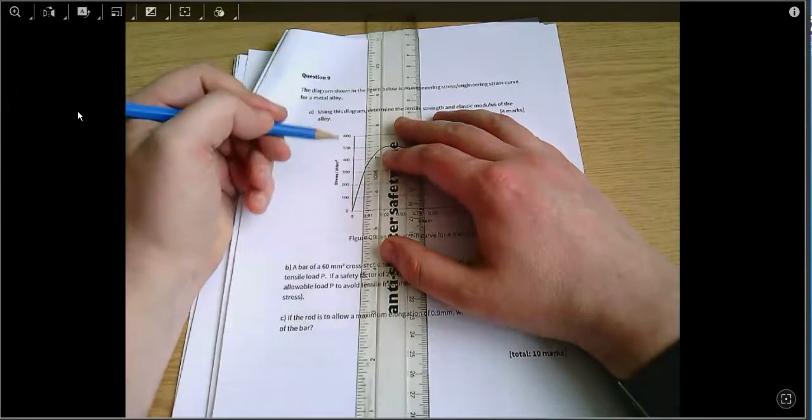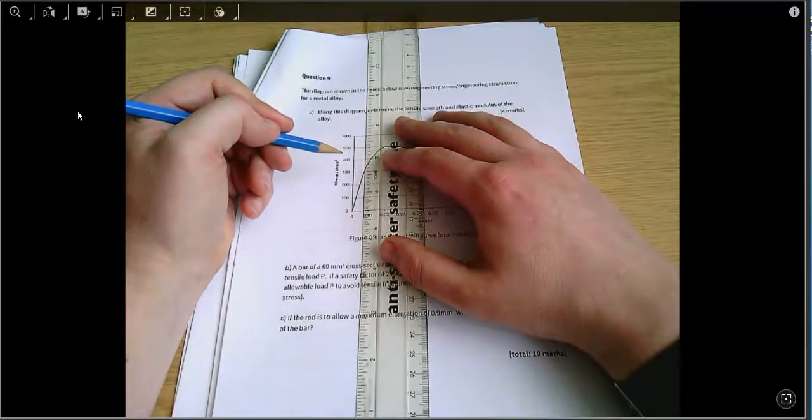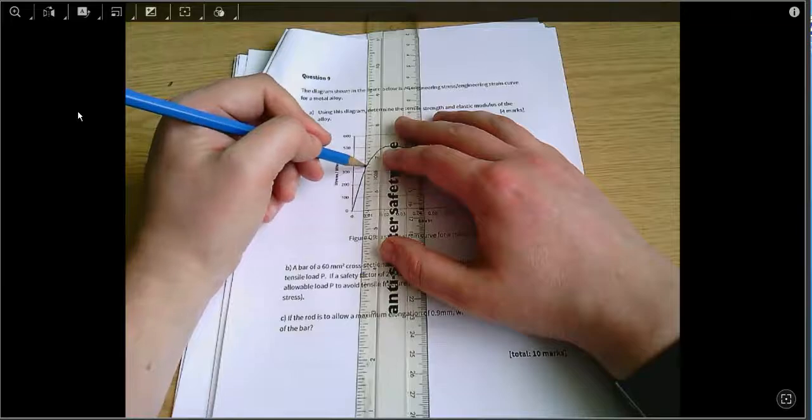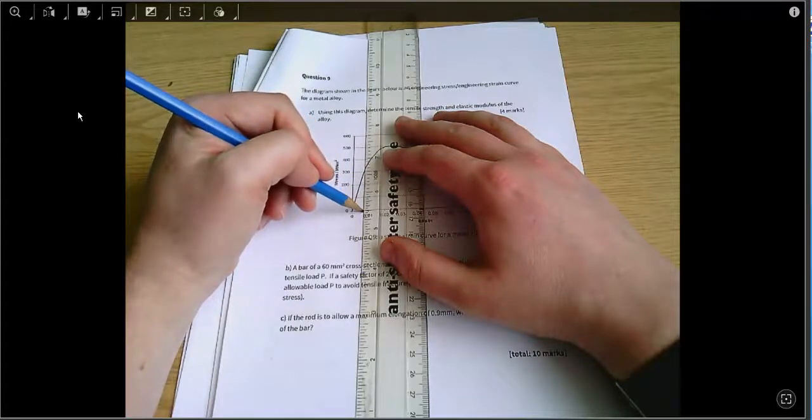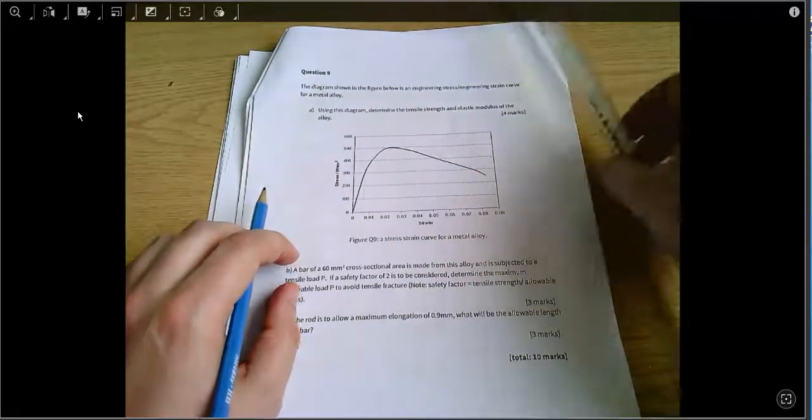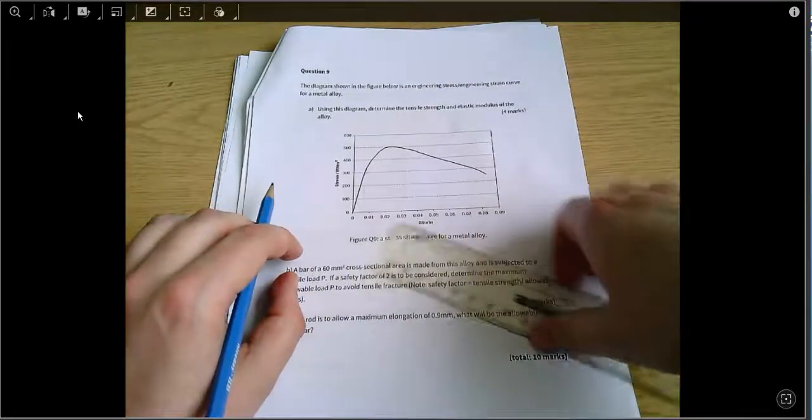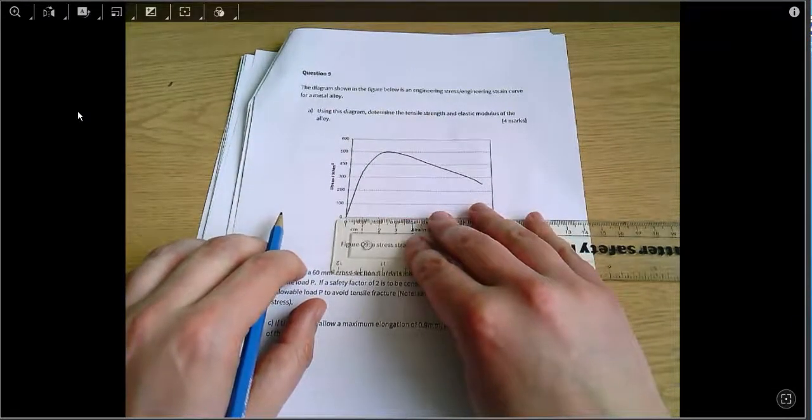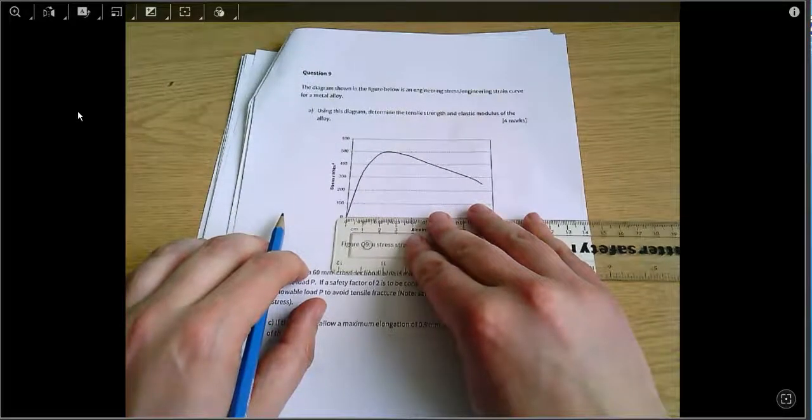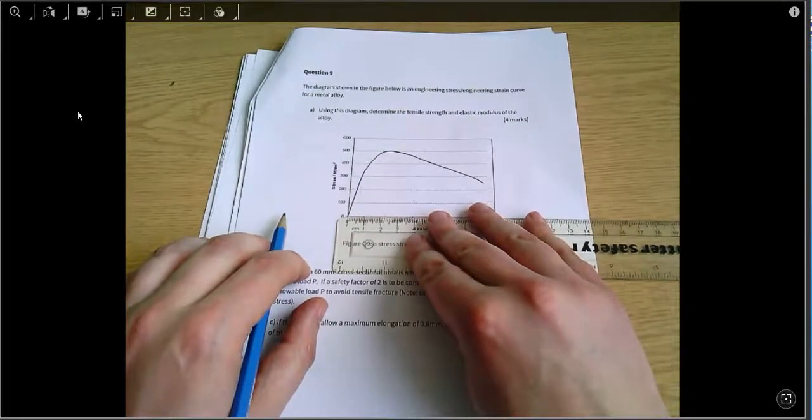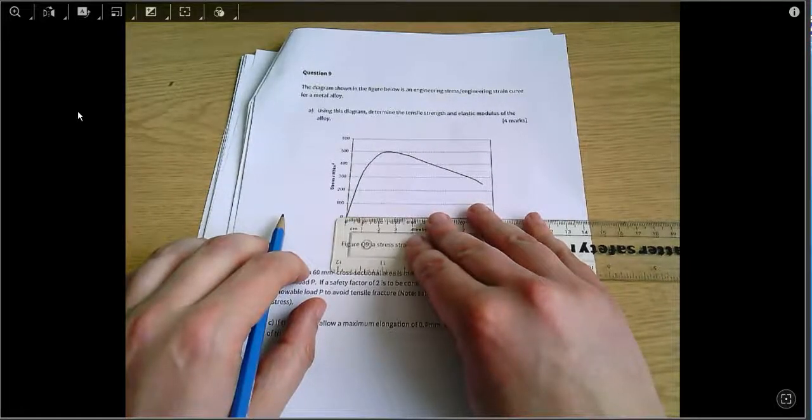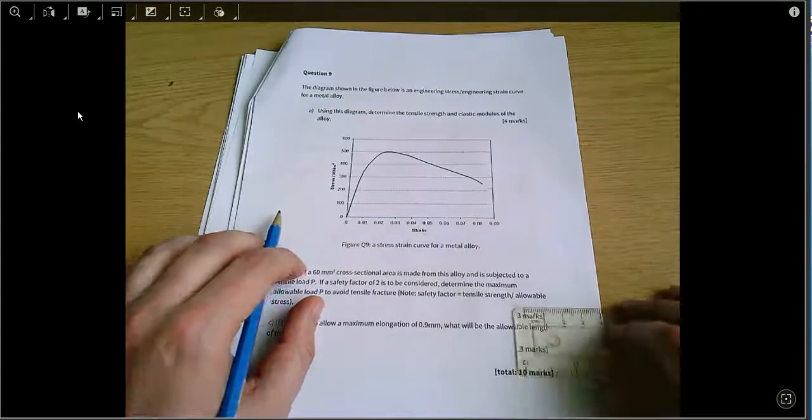I think that ruler is about parallel now to the vertical axis, and if I just trace down there—I mean you would have got the marks for being reasonably close on this. You don't have to be absolutely perfect, but that looks to me like not a bad 0.006.